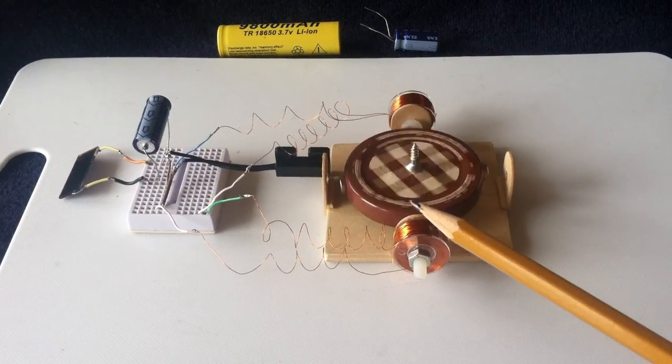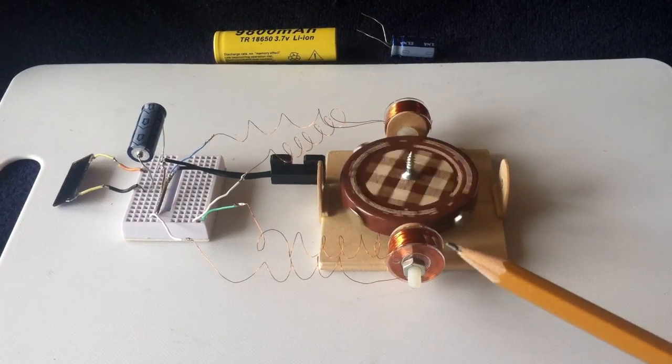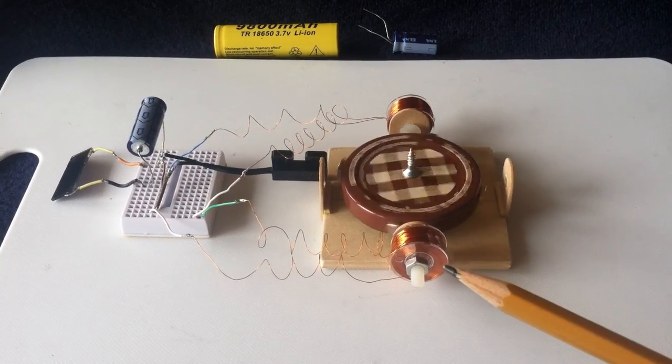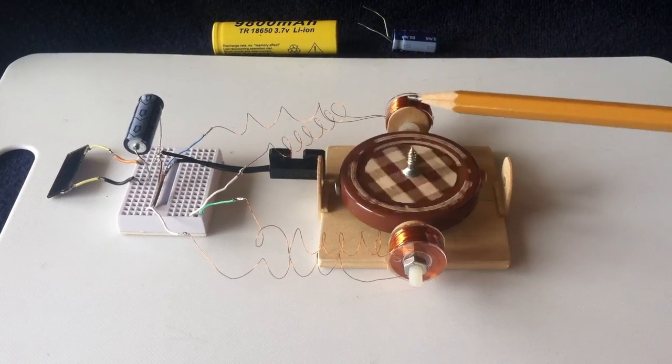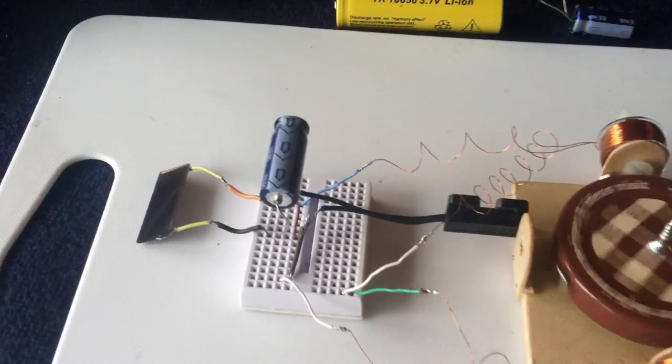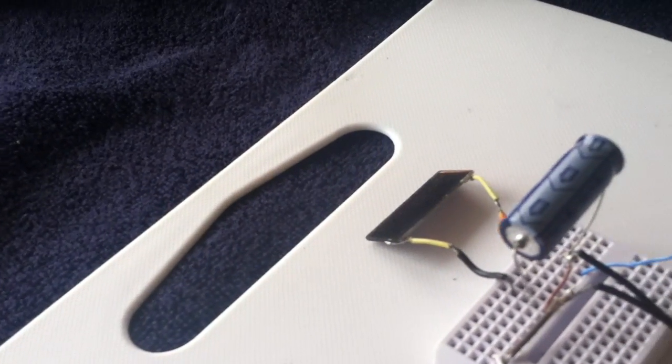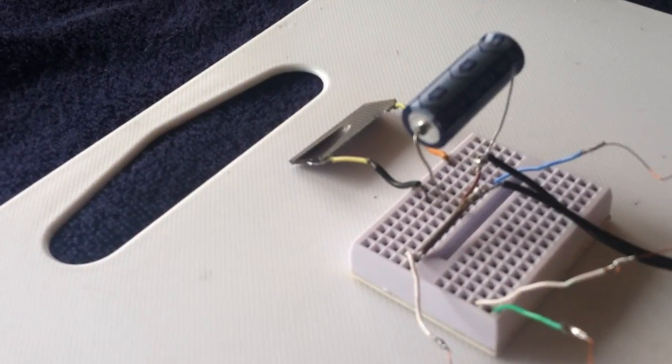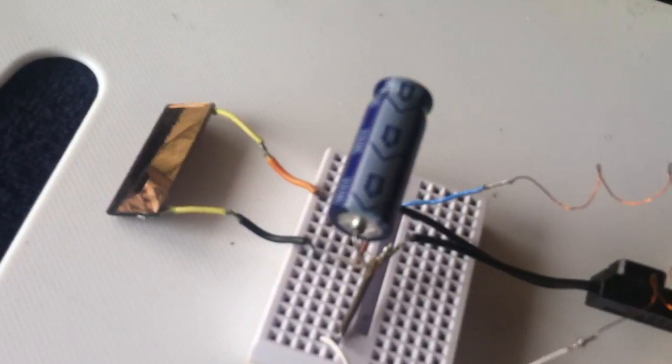Now this is a Smucker's jar lid, steel jar lid, that I used in my AC motor experiments. I've just got it set up here with a couple of air core coils and a reed switch and an electrolytic capacitor, I think that's a 470 microfarad electrolytic capacitor. That's not a super capacitor.